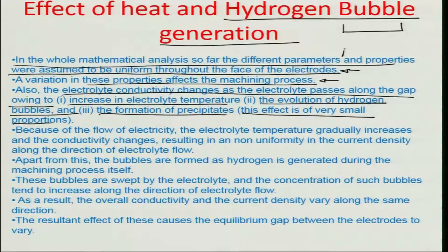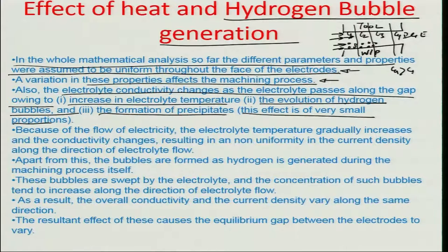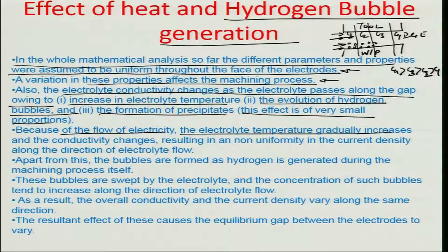Think of it like this: in the tool-work piece inter-electrode gap combination, you are flowing the electrolyte in a given direction. The hydrogen gas keeps getting generated as the electrolyte flows past. Looking at different zones — C1, C2, C3, C4 — C4 is greater than C1, because hydrogen keeps on being added as the electrolyte flows. Because of the flow of electricity, the electrolyte temperature also gradually increases.